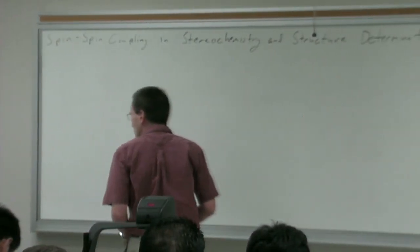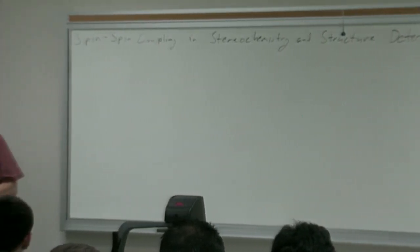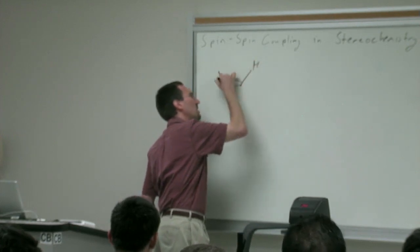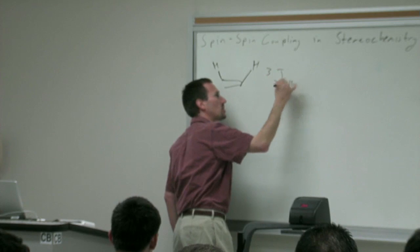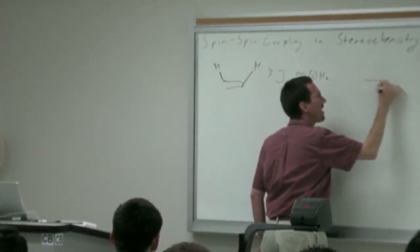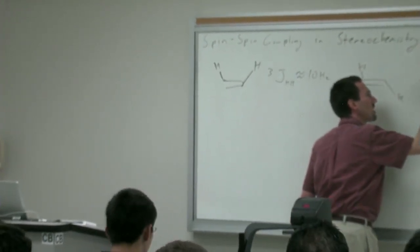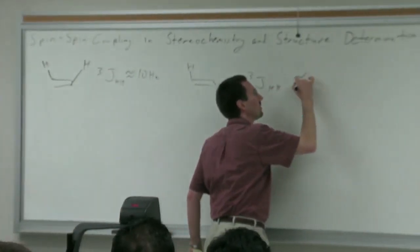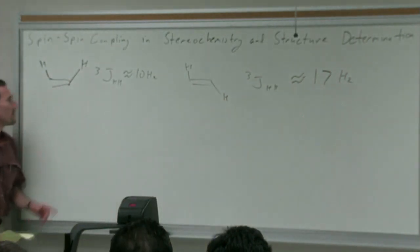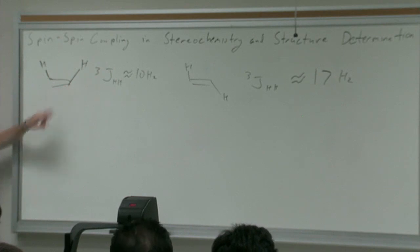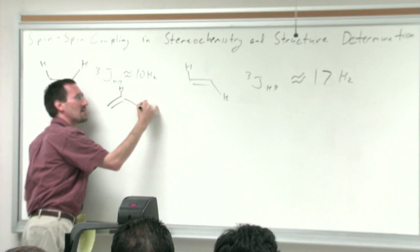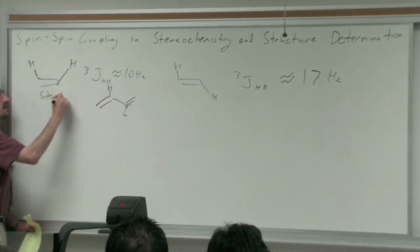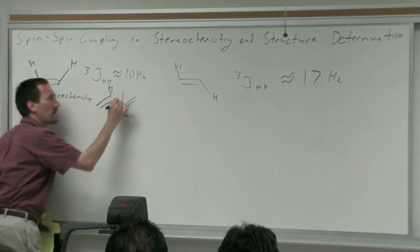When discussing coupling constants, there are sometimes really big differences between them. For example, in alkenes, if you have a cis coupling your J3HH is about 10 hertz, and if you have a trans coupling your vicinal coupling J3HH is about 17 hertz. It's important to make sure you understand the difference between coupling through a double bond versus coupling between double bonds, as many beginners confuse stereochemistry with conformation.